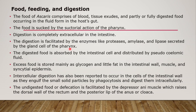The pharyngeal glands secrete enzymes — protease, amylase, and lipase — which help in digestion of food. The digested food is absorbed by the intestinal cells and distributed by the pseudocoelomic fluid. Excess food is stored mainly as glycogen and some fat in the intestinal cells, intestinal wall muscles, and syncytial epidermis. Intracellular digestion has also been reported to occur in cells of the intestinal wall, as they engulf small solid particles by pinocytosis. The undigested food is egested by the action of the depressor ani muscles, which raise the dorsal wall of the rectum and the posterior lip of the anus.